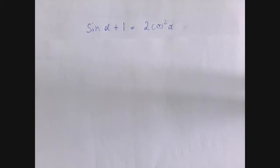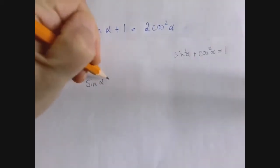We are going to get rid of one in terms of the other via the Pythagorean identity. We can easily rewrite cosine squared alpha in terms of sine alpha. So let's do that.